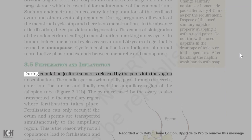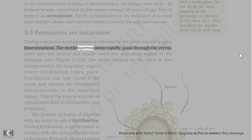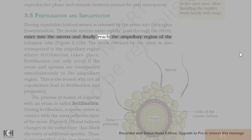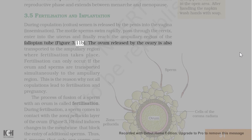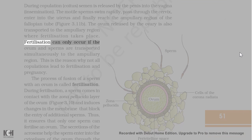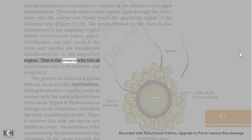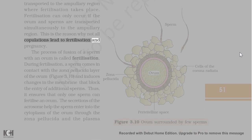During copulation (coitus), semen is released by the penis into the vagina (insemination). The motile sperms swim rapidly, pass through the cervix, enter into the uterus, and finally reach the ampullary region of the fallopian tube. The ovum released by the ovary is also transported to the ampullary region where fertilization takes place. Fertilization can only occur if the ovum and sperms are transported simultaneously to the ampullary region. This is the reason why not all copulations lead to fertilization and pregnancy.